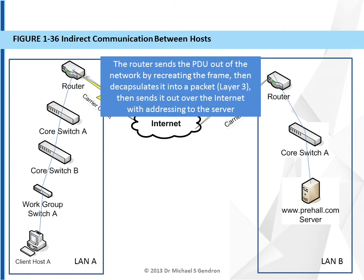Once the frame reaches the edge router, that PDU — and remember there are multiple types of PDUs: there are frames, there are packets, there are segments — the type doesn't matter for this discussion right now. The router sends the PDU out of the network by recreating the frame. It had to decapsulate up to layer three, recapsulate, and send the frame out over the internet with the address of the server, or more correctly, with the address of the LAN for that server.